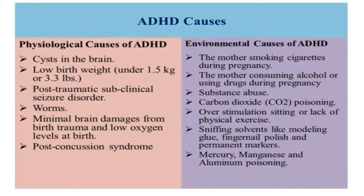Environmental causes refer to how our surrounding environment affects our body. These include the mother smoking cigarettes during pregnancy, the mother consuming alcohol or using drugs during pregnancy, substance abuse, carbon dioxide poisoning, over-stimulation, lack of physical exercise, sniffing solvents like modeling glue, fingernail polish and permanent markers, and mercury, magnets and aluminum poisoning.